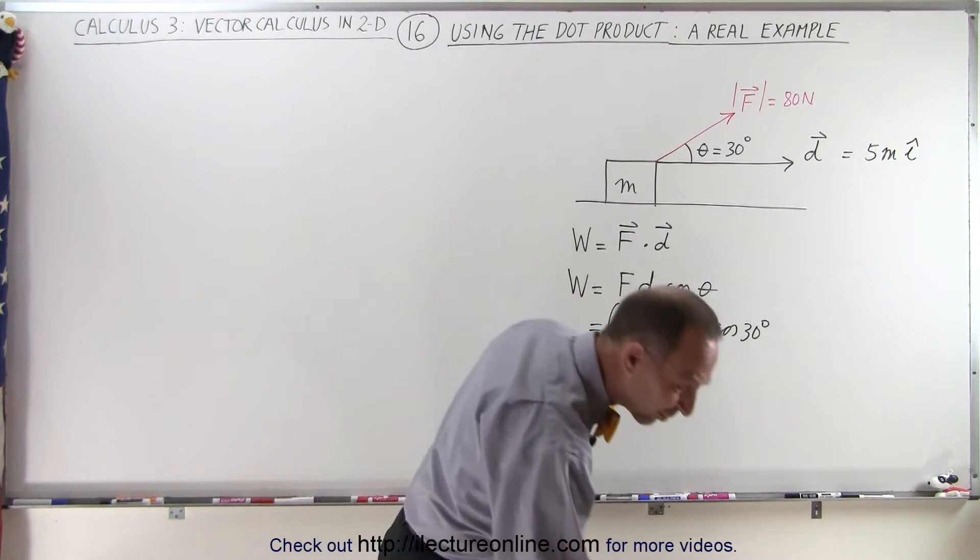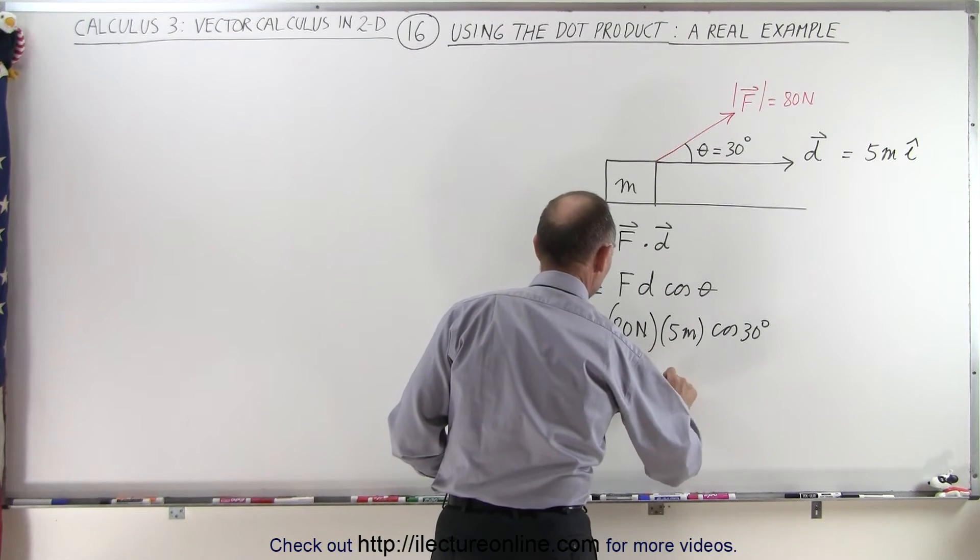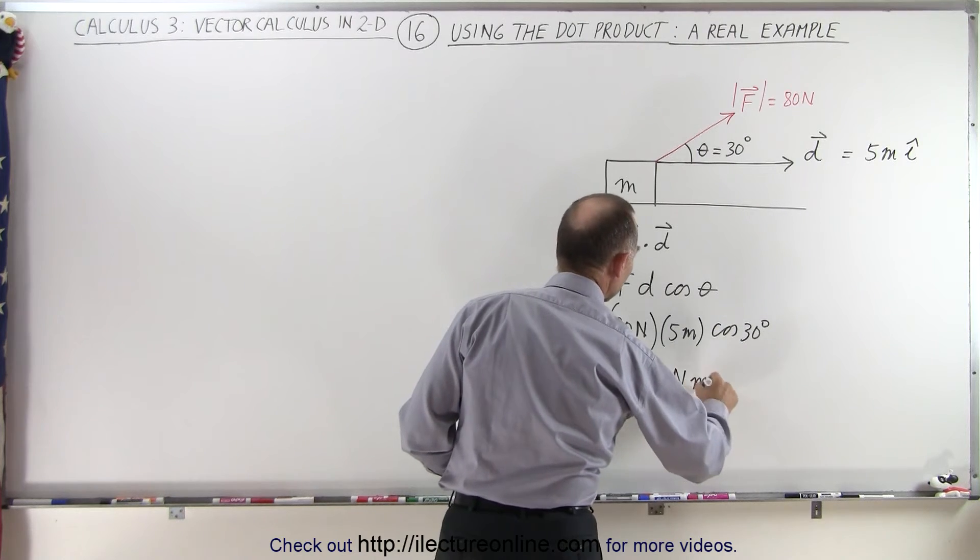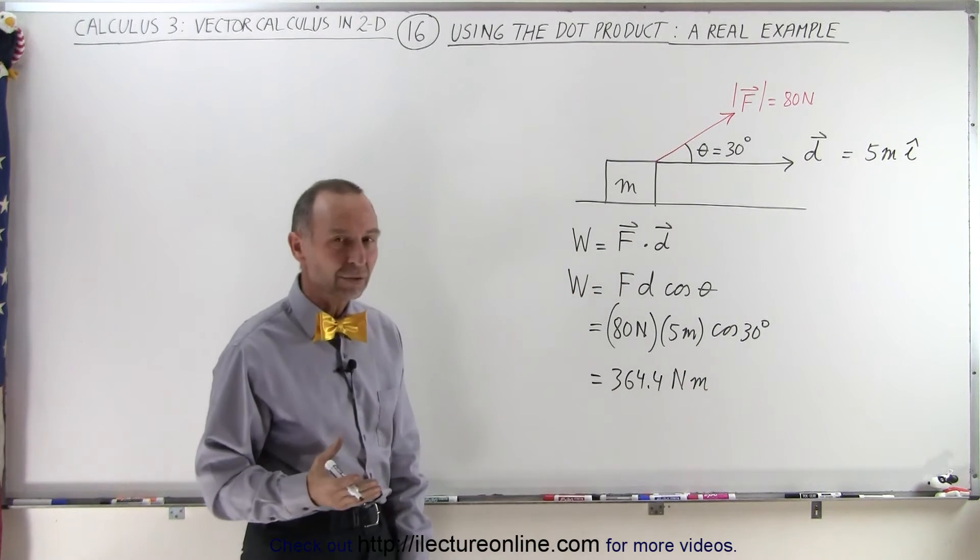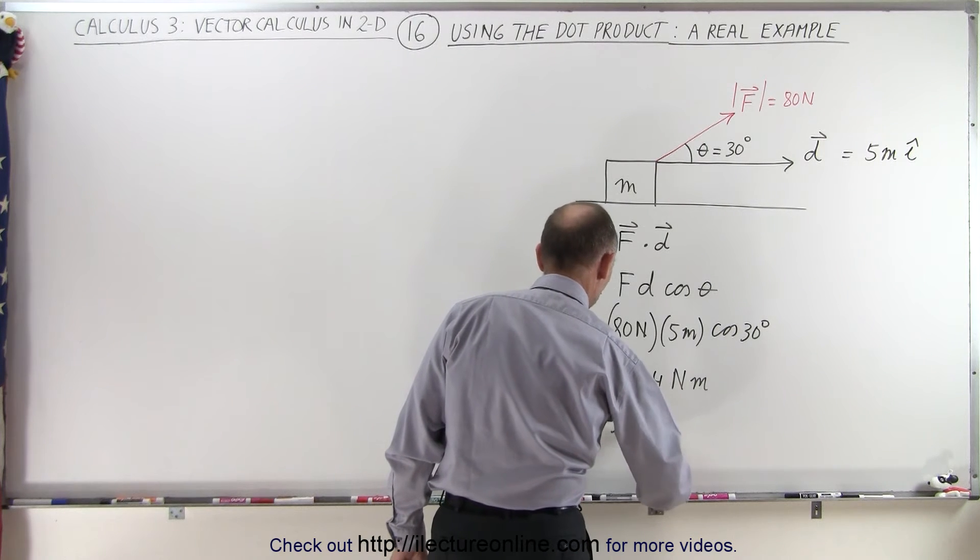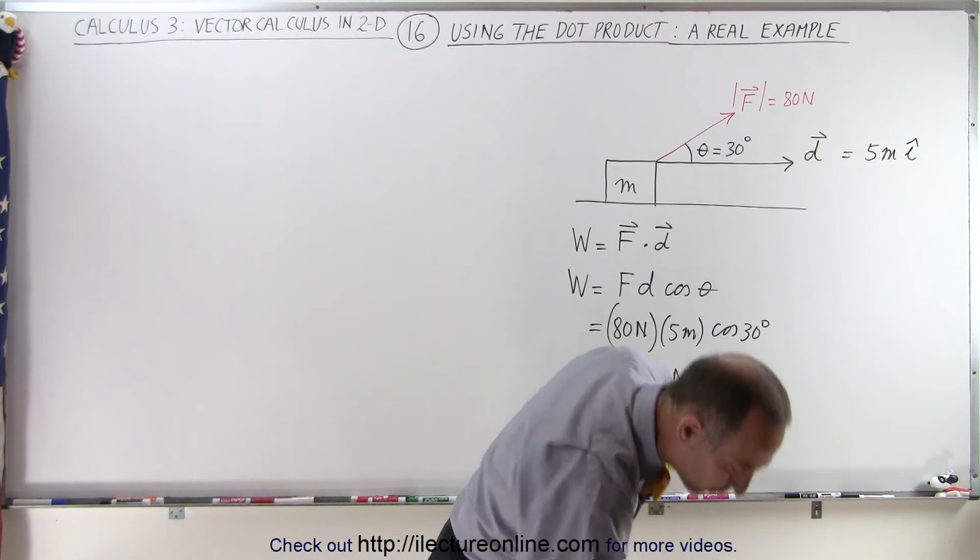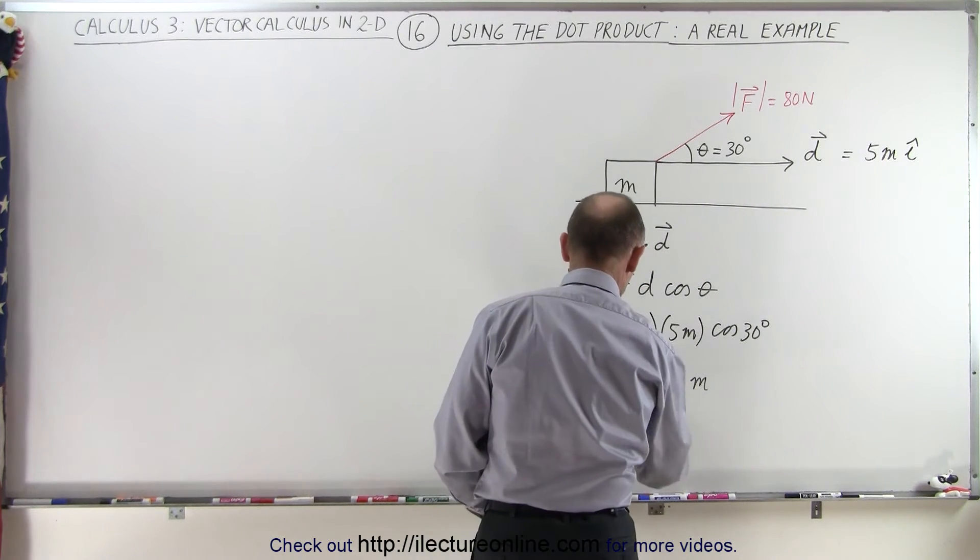That would be 364.4 newton meters. Now a newton meter is also a joule, so this equals 364.4 joules. Wait, let me make sure I got that right. No, I'm not looking at this correctly.